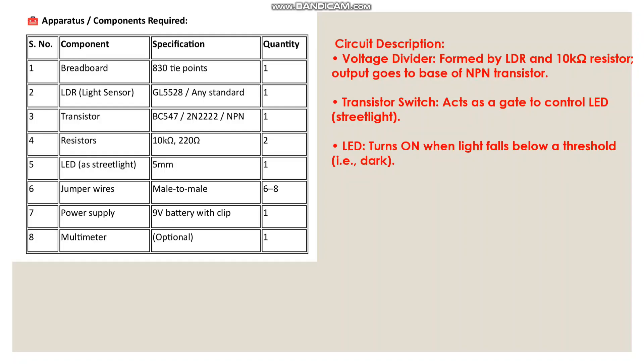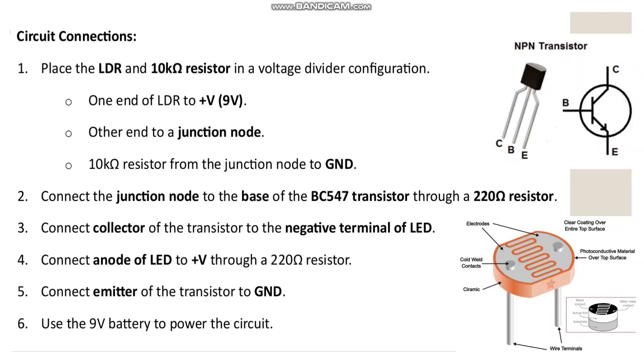There are three major elements. One is the voltage divider — the LDR along with the 10 kilohm resistor acts as a voltage divider. The transistor will act as a switch, and the LED is the replacement for the street light.